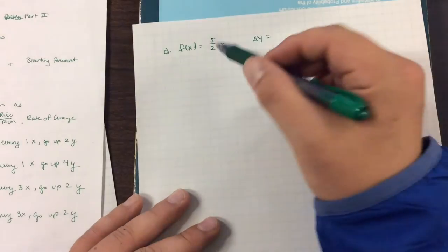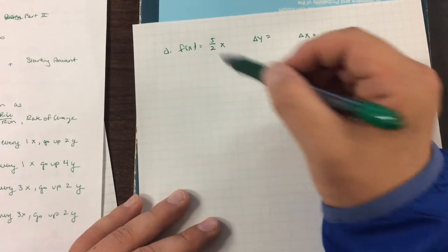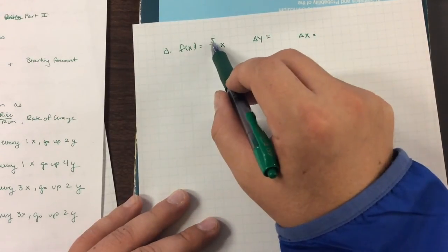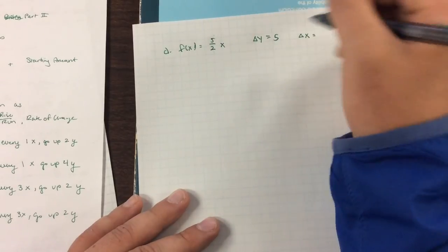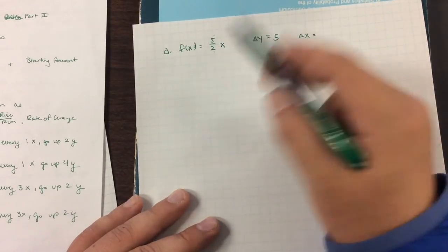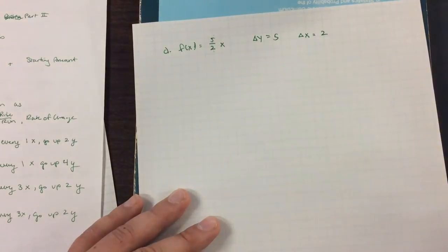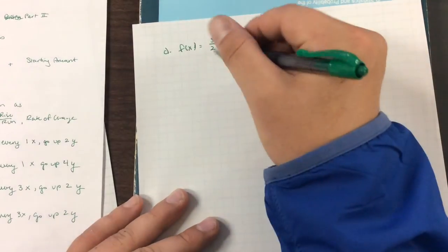Well, our change of y here is up on top. It's always change of y divided by change of x. So our change of y is 5. And our change in x is 2. So let's try and graph this.